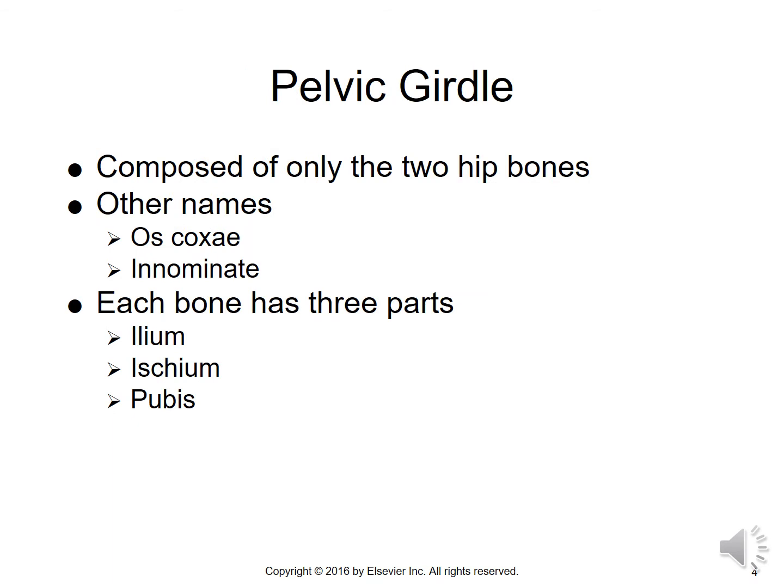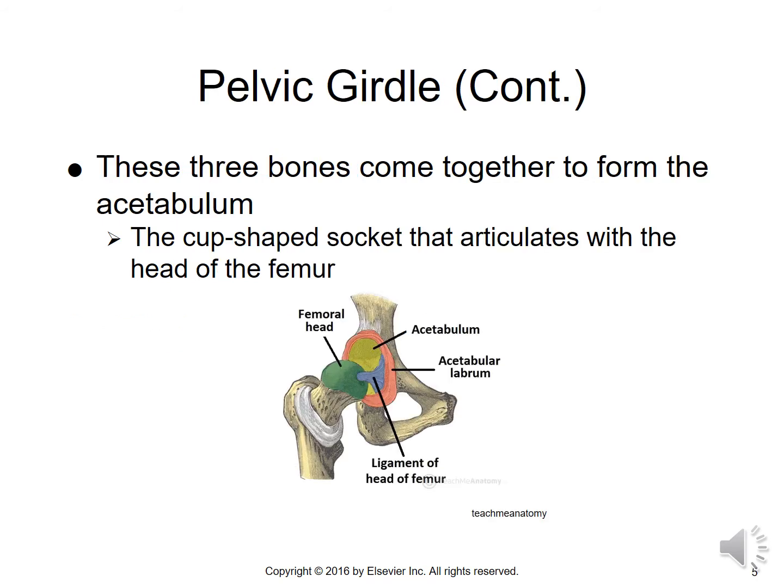The pelvic girdle consists of only the two hip bones. The other names for the hip bones are os coxae and innominate. Each bone has three parts: the ilium, the ischium, and the pubis. These three bones come together to form what is termed the acetabulum, which is a cup-shaped socket that articulates with and accommodates the head of the femur.